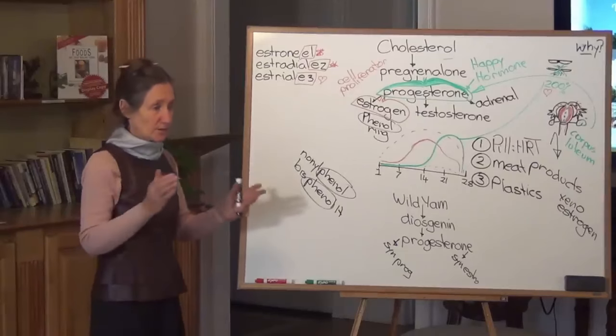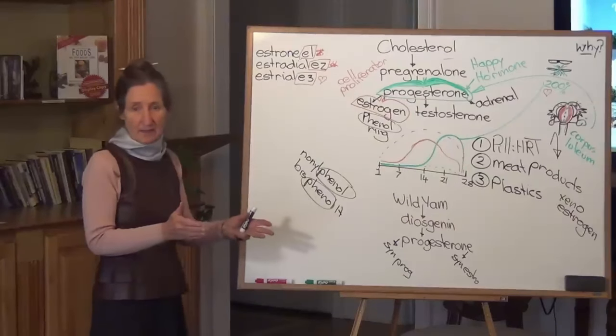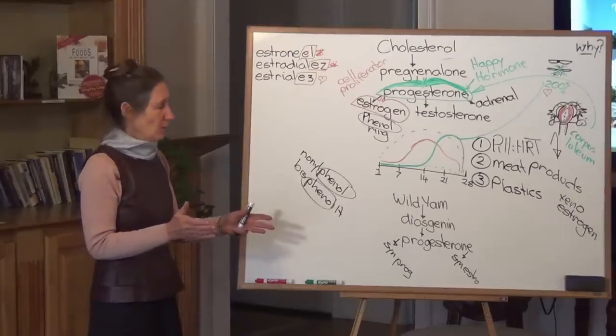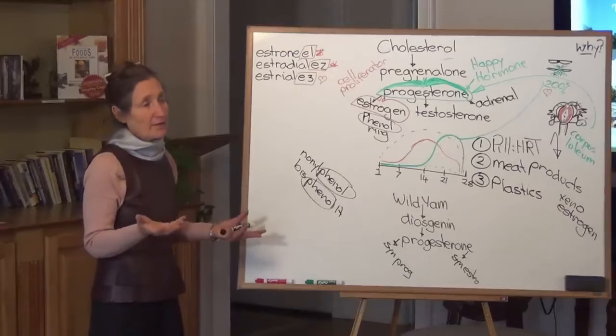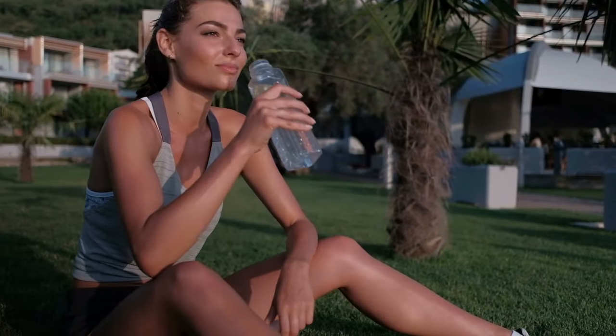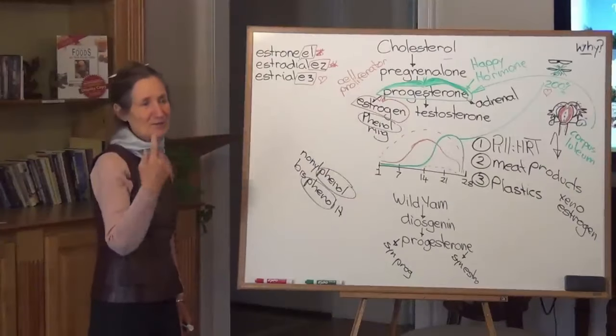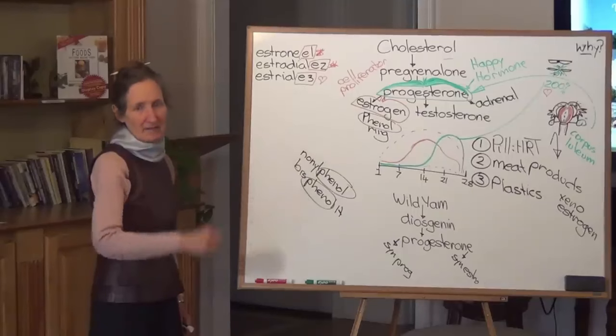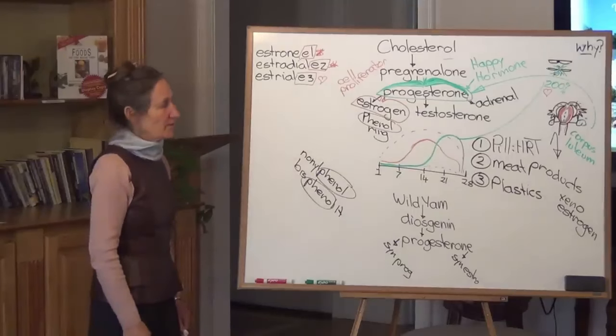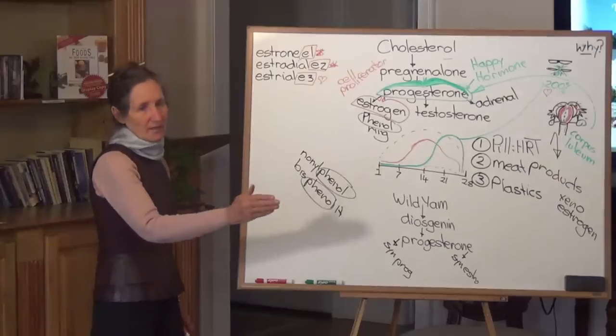But notice what they all have. They all have the phenyl ring. And that's why plastics, they're called xenoestrogens. That's estrogen mimickers. They mimic estrogen, they get into the estrogen receptor site. It's one of the reasons for this hormone imbalance epidemic that we're seeing is the exposure to the plastics. One of the worst is hot soup into a plastic takeaway container.